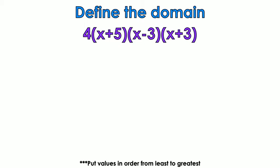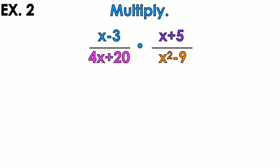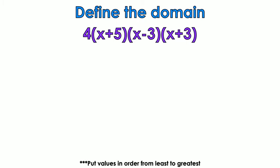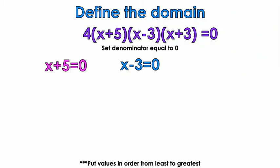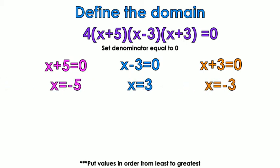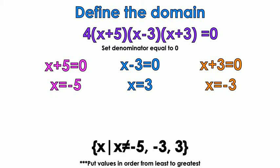Now let's talk about the domain for example 2. The denominators were 4x plus 20 and x squared minus 9. I factor them: 4 times the quantity x plus 5, and x minus 3 times x plus 3. I set each factor equal to 0 — ignoring the constant 4 since 4 cannot equal 0. That gives x equals negative 5, x equals positive 3, and x equals negative 3. These are where the domain is undefined, listed in order from least to greatest. That's example 2.